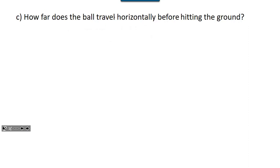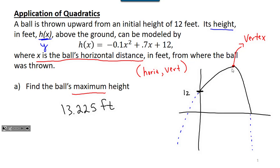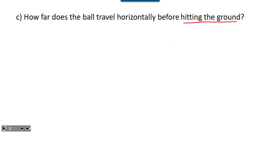The last part says how far does the ball travel horizontally before hitting the ground? I'm looking for an x value since that's the horizontal distance. When it hits the ground, the height — my y value — is zero. So I take my equation and set it equal to zero: negative 0.1x squared plus 0.7x plus 12 equals zero.